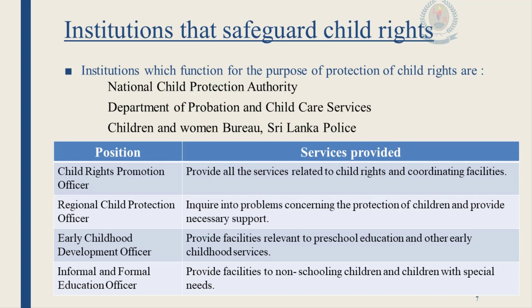In this table I have given some of the government officer services providing services to children and families at regional level. The first position is Child Rights Promotion Officer — providing all services related to child rights and coordinating facilities. The second is Regional Child Protection Officer — inquiring into problems concerning the protection of children and providing necessary support. The third is Early Childhood Development Officer — providing facilities relevant to preschool education and other early childhood services. The fourth is Informal and Formal Education Officer — providing facilities to non-schooling children and children with special needs.